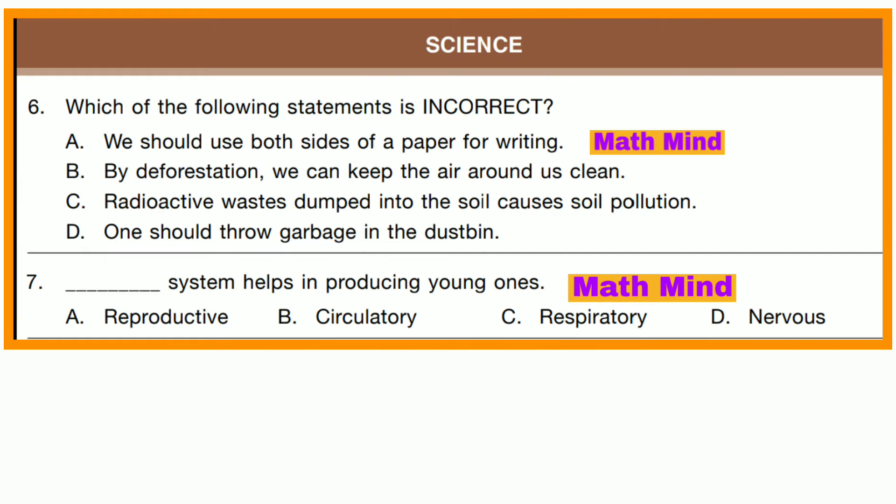Question number 6. Which of the following statements is incorrect? In option B, it is written: by deforestation, we can keep the air around us clean. This is a wrong statement. Because plants take in carbon dioxide and give out oxygen.